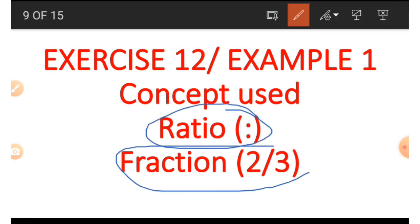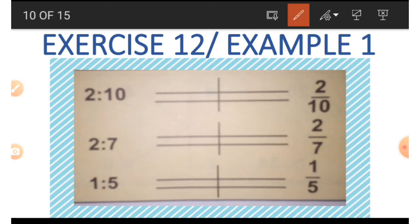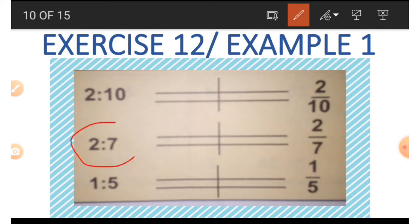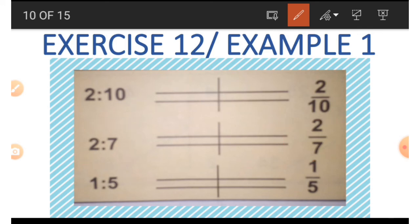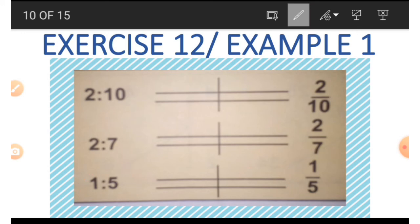Exercise 12, Example 1 makes use of the concept of ratio and fraction — changing a ratio to a fraction. For example, 2 to 10 as a ratio becomes 2 over 10 as a fraction. The number before the colon goes to the top and the number after goes under. So 2 to 7 becomes 2 over 7, and 1 to 5 becomes 1 over 5. It's quite simple.